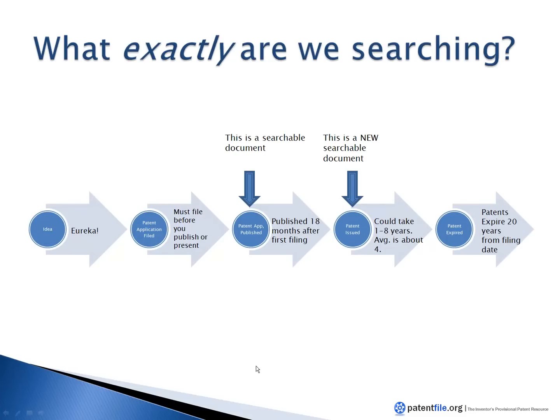Let's go through a quick invention and patent timeline. Let's say you have your idea — the first thing you do is file your patent application. Make sure you file before you tell anyone else about your idea, publish it, or present it anywhere publicly, because if you do that before you file, you can actually lose some patent rights. So be very careful there.